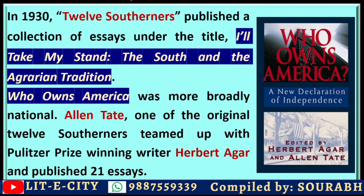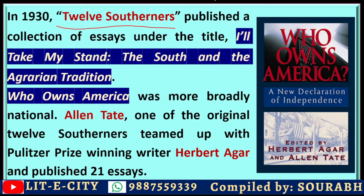In 1930, twelve Southerners — all very important and influential university scholars — published a collection of essays titled 'I'll Take My Stand: The South and the Agrarian Tradition.' 'Who Owns America?' was broader, including articles not only from the South but also from the North. Alan Tate, one of the twelve Southerners, teamed up with Pulitzer Prize-winning writer Herbert Agar and published 21 essays.